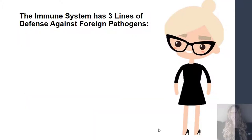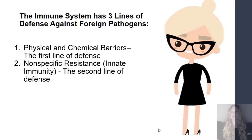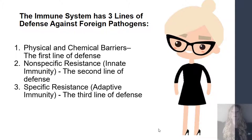Our immune system has three lines of defense against foreign pathogens. Our physical and chemical barriers, which are the first line of defense. Our non-specific resistance, our innate immunity, as the second line of defense. And our specific resistance, which is our adaptive immunity, as our third line of defense.